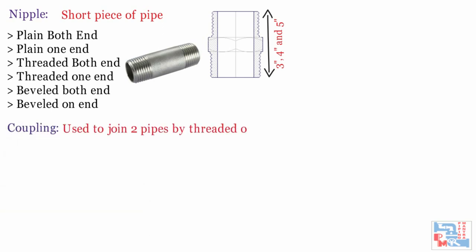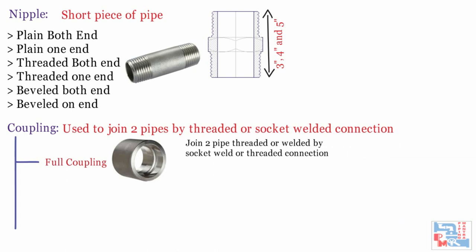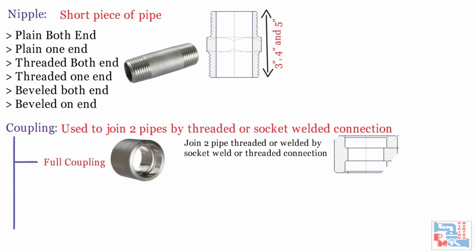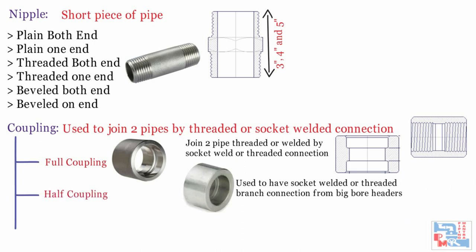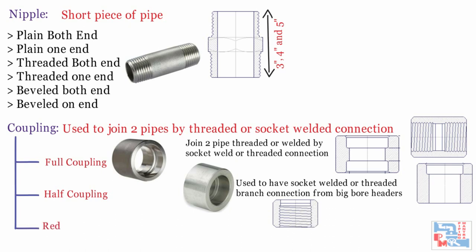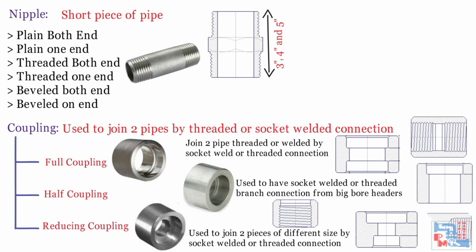Coupling is used to join two pipes by threaded or socket welded connection. Three types are used globally. Full coupling is used to join two threaded or welded pipes by threaded or socket welded connection. Half coupling is used to have socket welded or threaded branch connections from large-bore headers. Reducing coupling is used to join two pipes of different sizes by socket welded or threaded connection. After connecting, a coupling maintains the pipe centerline at the same elevation.